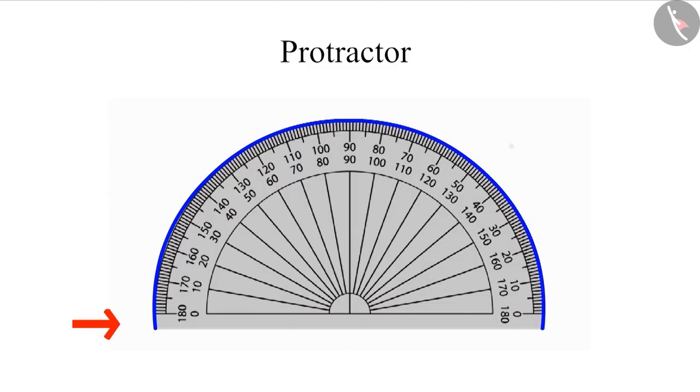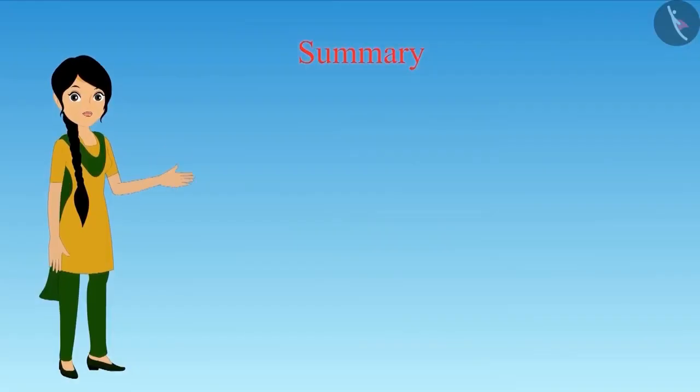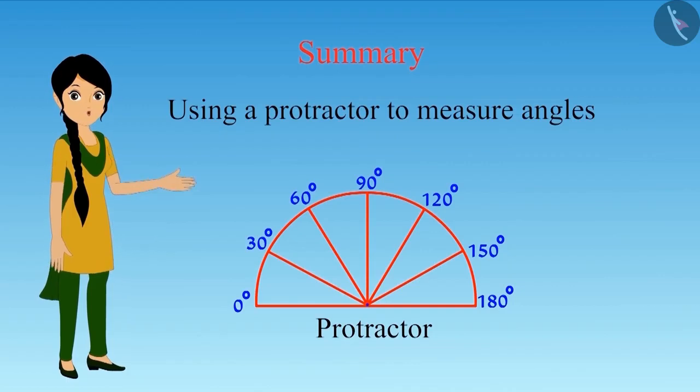It has numbers from 0 to 180 on both sides from right to left and left to right. In this way, we can measure the angle from both sides using the protractor. In this video, we learned estimation of an angle using a divider and using a protractor to measure angles.